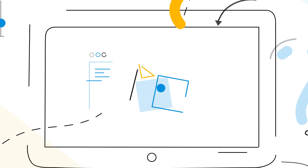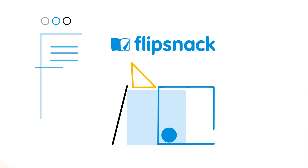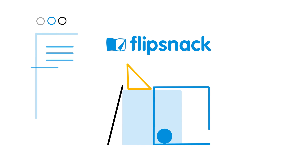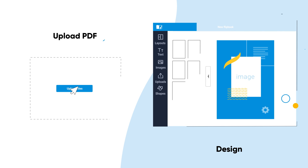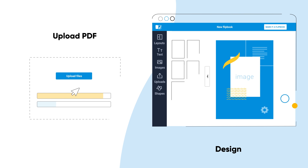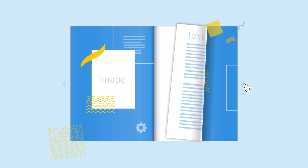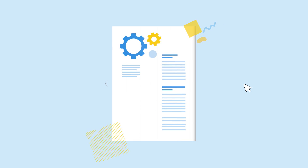What is Flipsnack and what can you accomplish with it? Think about Flipsnack as a two-in-one tool. First, you have the FlipBook Maker, a simple way to upload PDFs and convert them into stylish page flip catalogs. Anything you publish through Flipsnack will instantly look more professional and elegant, both on computers and on mobile devices.